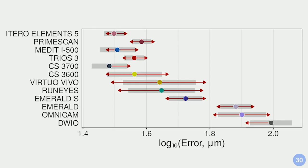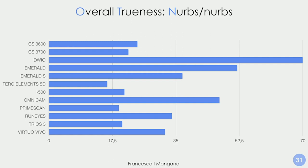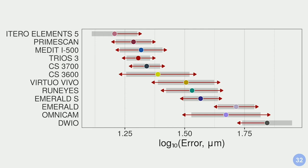In the logarithmic scale representation, when the red arrows overlap, there is no statistically significant difference between scanners. For the NURBS-to-NURBS evaluation, results are similar but very interesting — one scanner achieves less than 20 microns mean error in the full arch: the iTero Element 5. Then the other best scanners follow with very little differences. We see three groups of scanners, with the first group composed of iTero Element 5, PrimeScan, Medit, TRIOS, CS3700, and CS3600 performing much better than the others.